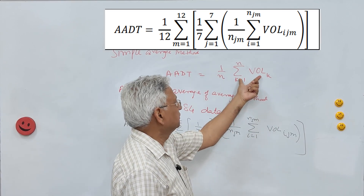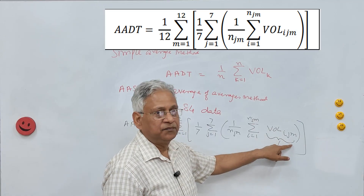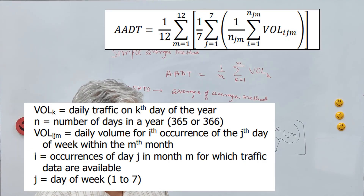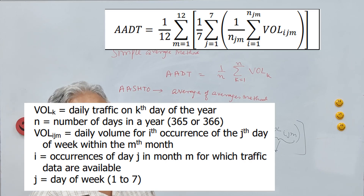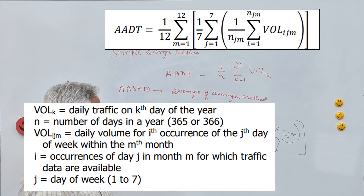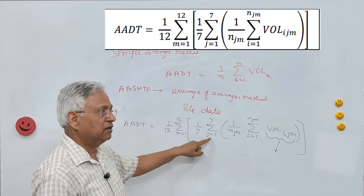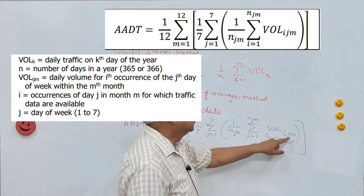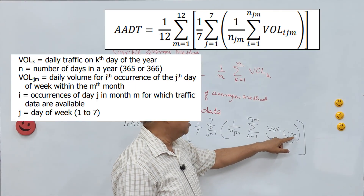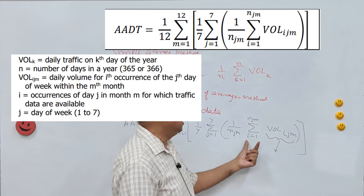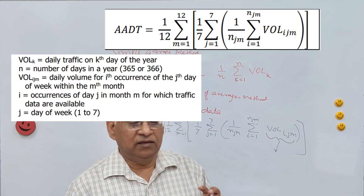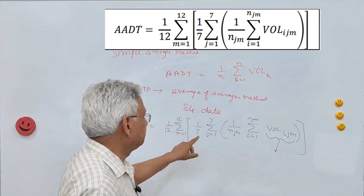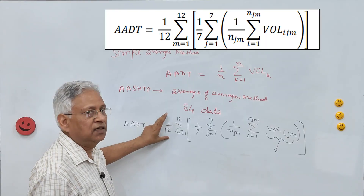The volume IJM is the daily volume for the Ith occurrence of the Jth day of the week within the Mth month. M goes from 1 to 12 (months), and J goes from 1 to 7 (days of the week). This is called the average of averages method because it takes the average twice — the average of the day and the average of the month.